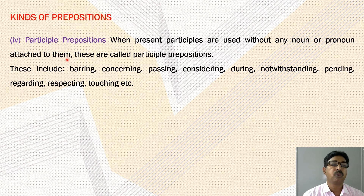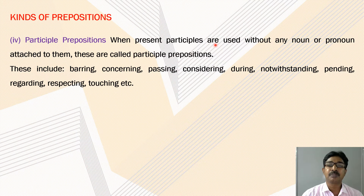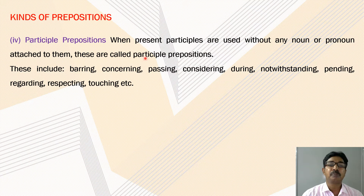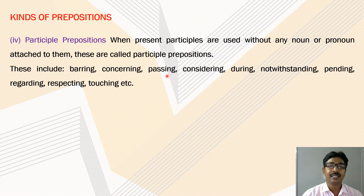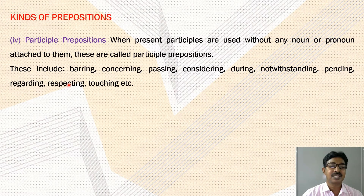The third and fourth kind: participle prepositions. When present participles are used without any noun or pronoun attached to them, these are called participle prepositions. These prepositions include: barring, concerning, passing, considering, during, notwithstanding, pending, regarding, respecting, touching, etc.